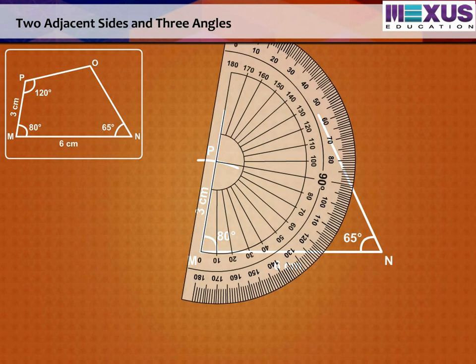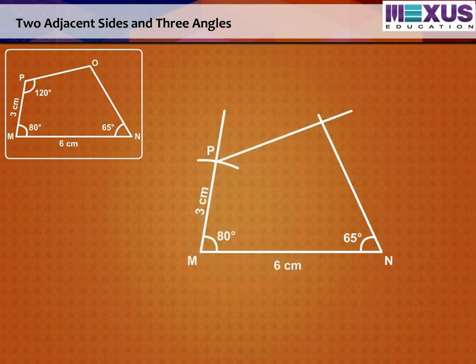At P, draw an angle of 120 degrees with the help of a protractor. Step 6. Now join the arms of these angles to meet at O.